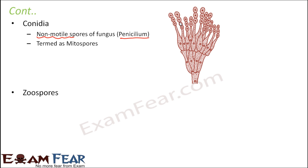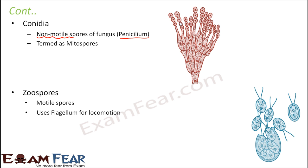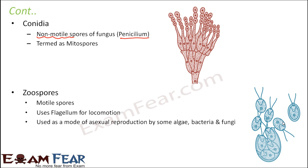Zoospores are one of the most common spores and they are motile spores — that is, they can move from one place to another. They are very microscopic, that is extremely small, and they use flagella for their locomotion. Here you can see the zoospores and their structure with flagella. The zoospores are present inside the structure, and when they come in contact with favorable conditions they get released, and each of them can give rise to a new organism. They are used as a mode of asexual reproduction by some algae, bacteria, and fungi. Some spores are motile, some are non-motile — that depends from organism to organism. But basically they are all contained inside a structure with a proper protective covering so that they can be protected against unfavorable conditions, and whenever favorable conditions are there, they give rise to a new organism.